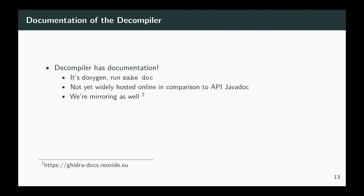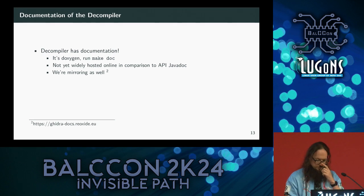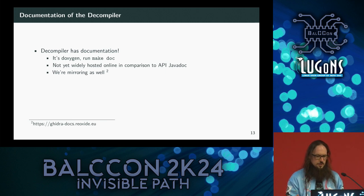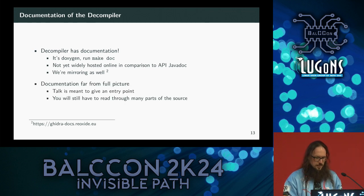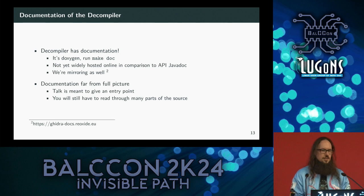The decompiler actually has documentation — it is somewhat extensive. You can go through the code for DoxyGen and read the descriptions there, which are most of the time very helpful. However, it doesn't give a very good overall picture. It isn't as widely hosted as the Java doc, since people usually extend Ghidra using the Java API. I uploaded the decompiler docs with a nicer theme — it should be reachable at the address on the slide. This talk is meant to give you an entry point into the big picture of how the decompiler works, so that you can make changes you want.